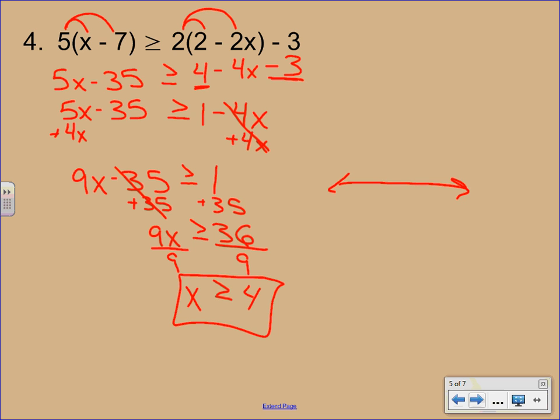To graph this one, put the 4 on the number line. Use a closed circle because of that equal bar. And then shade to the right.